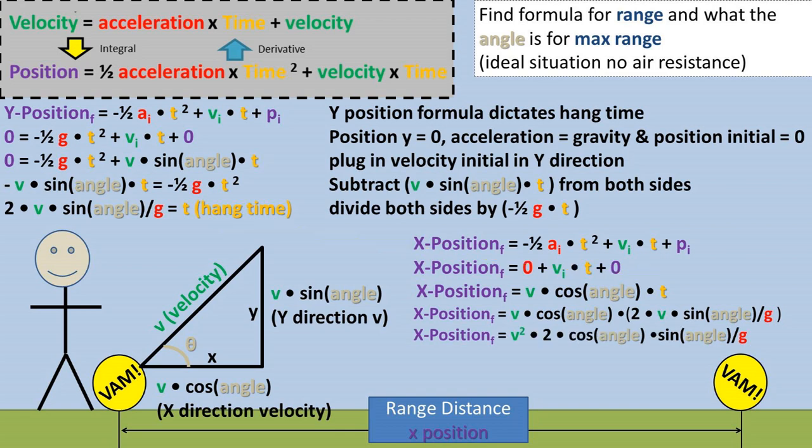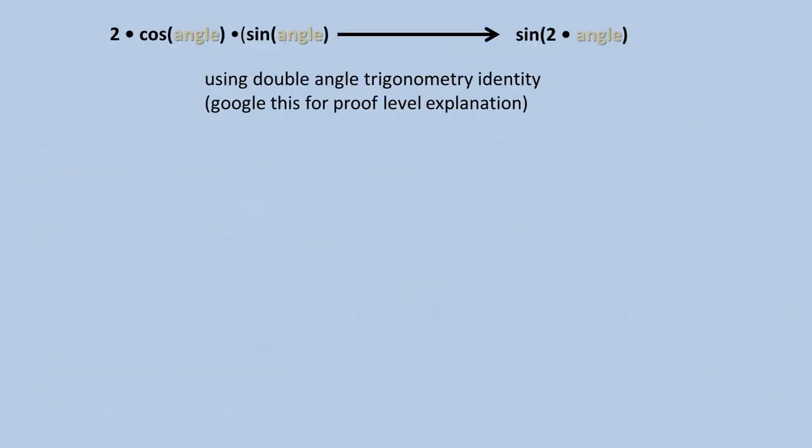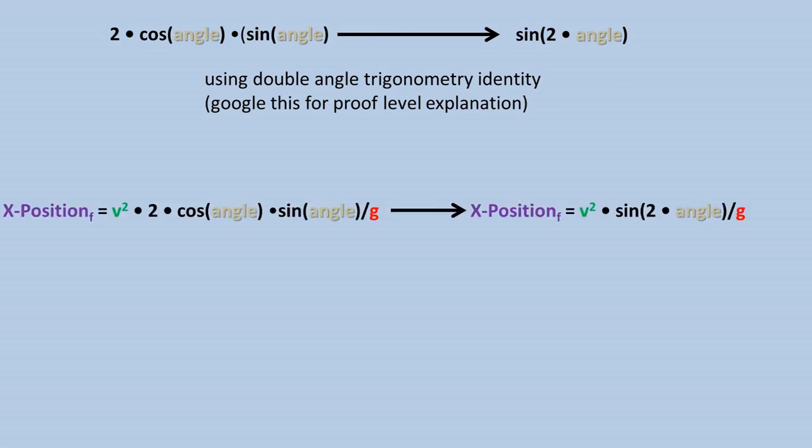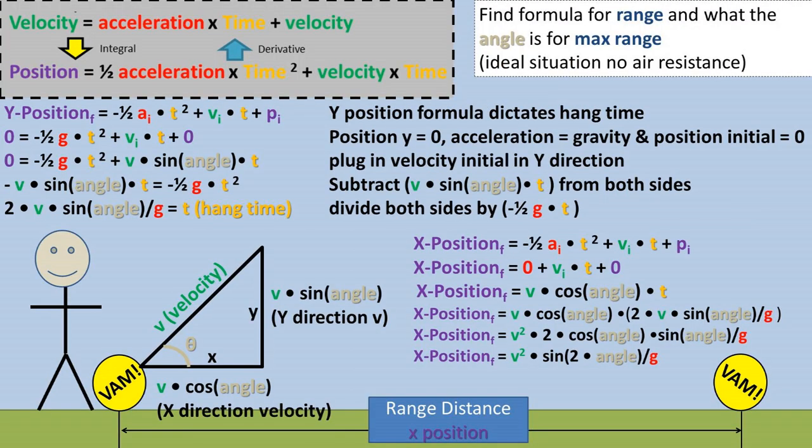Next, we can multiply out the expression to make it simpler to look at. We can further reduce this expression by using trig identities. Two times the cosine of the angle times the sine of the angle, using the double angle identity, equals the sine of two times that angle. Going back to our equation, we can substitute that value into the equation where two times the sine of the angle times the cosine of the angle once was. We have reached the reduced form of the range formula.